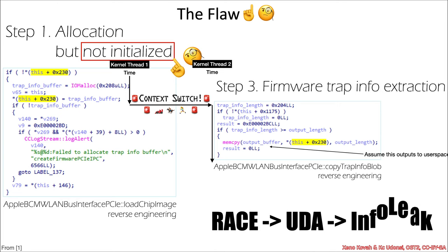So that looks to me like it's a race condition leading to an OODA vulnerability. So uninitialized, this is a pointer it's accessing from this uninitialized allocation that ultimately leads to an info leak.